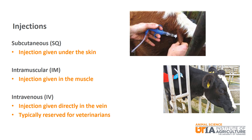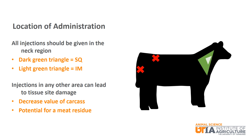IV injections are typically reserved for veterinarians. All injections, regardless of type, should be given in the neck region. Subcutaneous injections should be given in the dark green triangle, while intramuscular injections should be given in the smaller light green triangle. Administering injections in other areas of the animal can lead to tissue site damage, which is cut away during the harvesting process and decreases the value of the carcass and increases the potential for a drug residue in the meat.